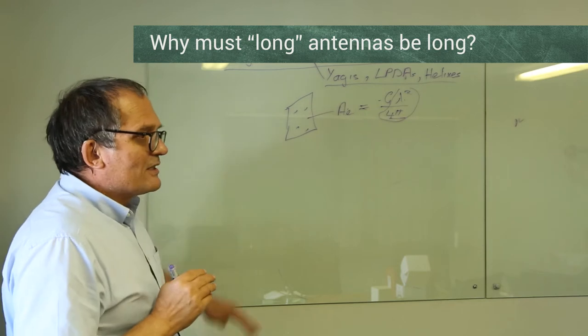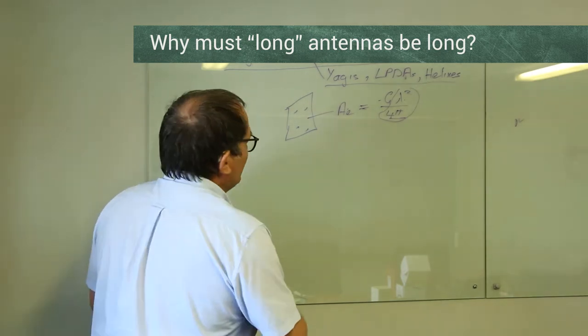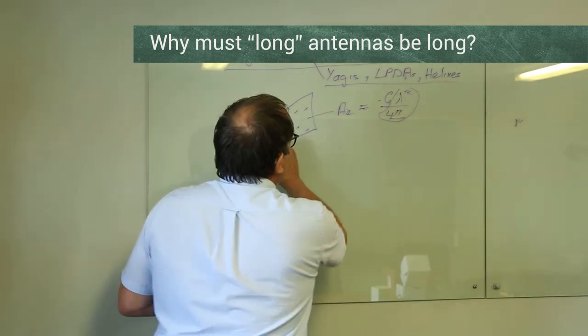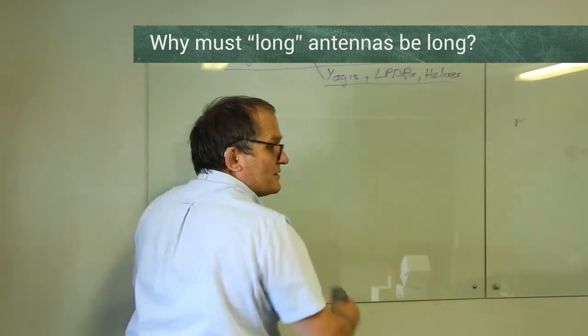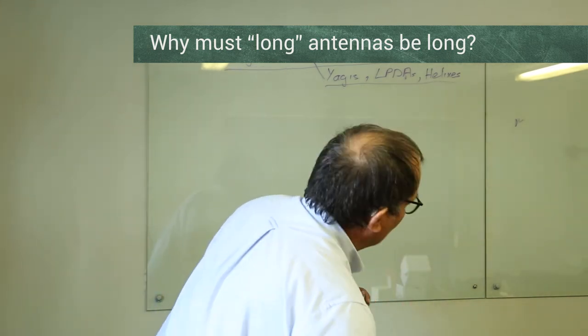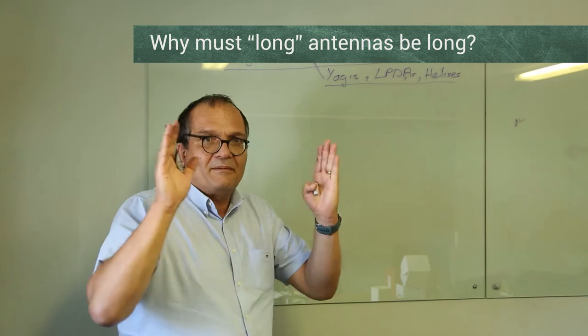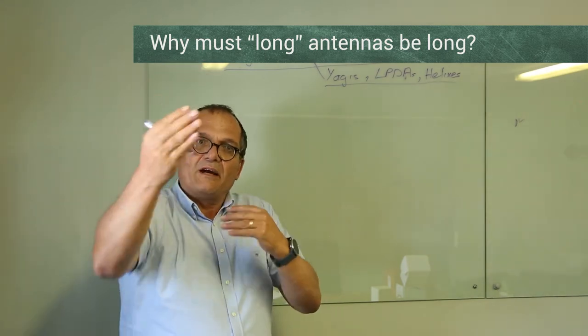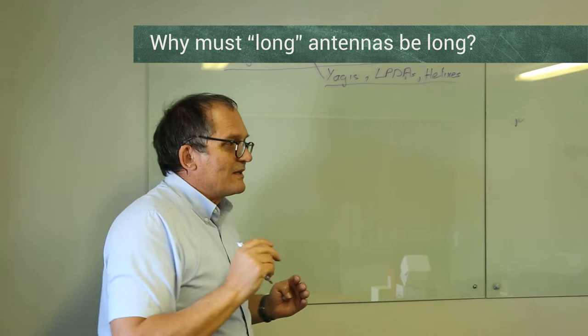If you now look at long antennas, they haven't got aperture. If I look at a Yagi from the front - because this is aperture, that's the wave coming towards it - and there it makes sense. Aperture makes sense on a flat antenna. Wave is coming, it will only capture this much of the wave.